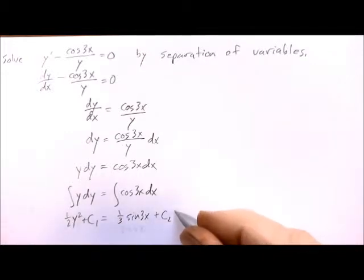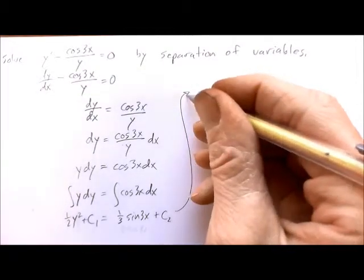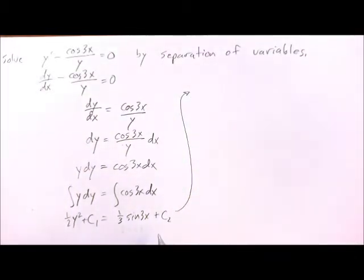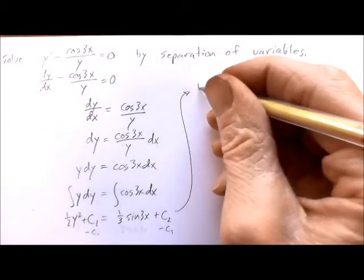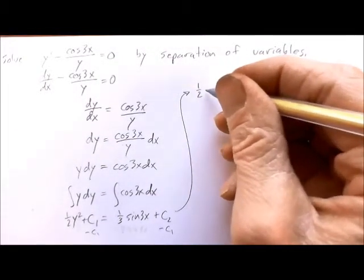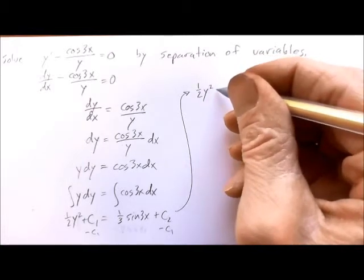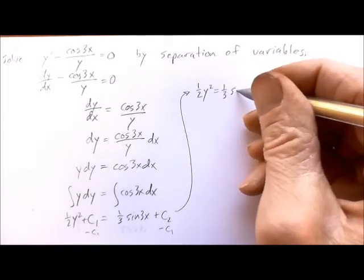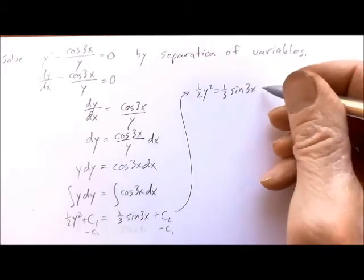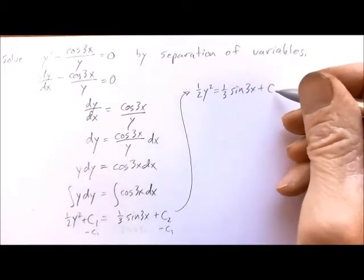Now it's pretty standard with this sort of problem that we'd like to have only one constant. So if we subtract c1 from both sides, this goes away and we get a c2 minus c1, which is a constant minus another constant, which is then a third constant. So we'll have one-half y squared equals one-third sine 3x plus, and I'll call that c3.